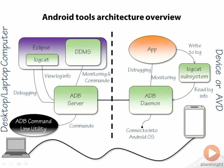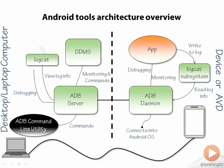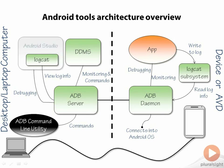Looking at the overall tools architecture, the only thing really being affected is Eclipse — Android Studio is coming in and replacing it as the place where we do all our coding and debugging. One thing to note is that DDMS is not inside Android Studio as an embedded perspective as it was in Eclipse, but you can still launch DDMS directly from Android Studio and your interaction with it will be exactly the same. Logcat is still accessible inside Android Studio, so really Android Studio is just the new focus of development while all the rest of the tools remain as they were.